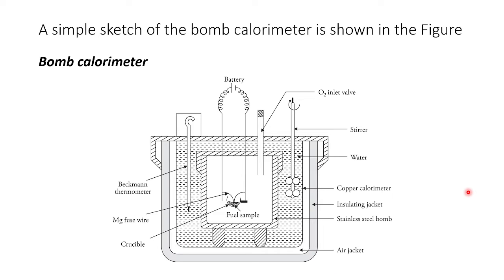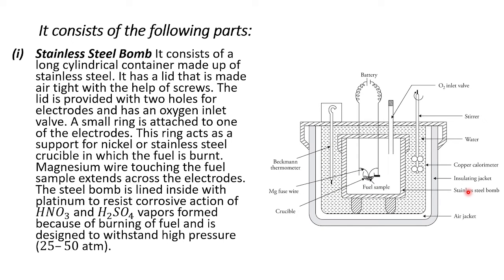This is what the bomb calorimeter looks like on the inside. It consists of the following parts. First is the stainless steel bomb, which is a long cylindrical container made of stainless steel. It has a lid that is made airtight with the help of screws. The lid is provided with two holes for electrodes and has an oxygen inlet valve. A small ring is attached to one of the electrodes, which acts as a support for a nickel or stainless steel crucible in which the fuel is burnt. Magnesium wire touching the fuel sample extends across the electrodes.